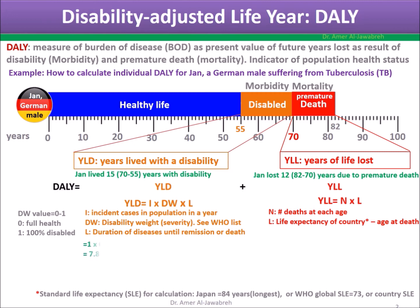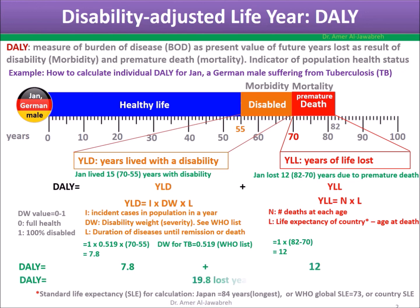YLD equals 1 (Jan) times 0.519 (according to the WHO list) times duration from disease until death, which is 70 minus 55 = 15 years. YLL equals 1 (Jan) times 82 minus 70 = 12 years (life expectancy minus age at death). DALY equals 7.8 plus 12, giving DALY = 19.8 lost years of healthy life.